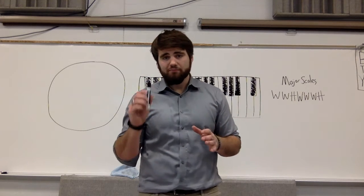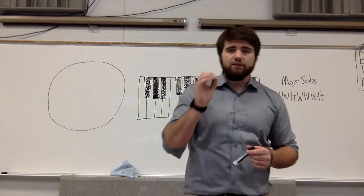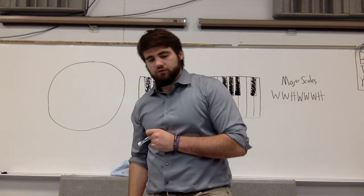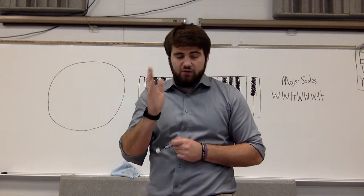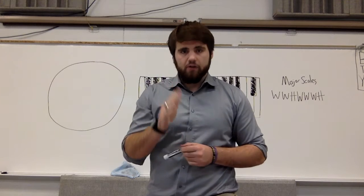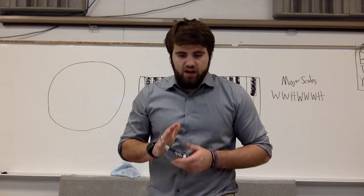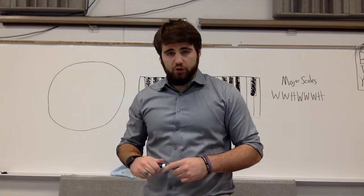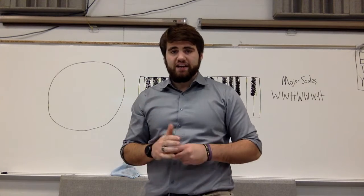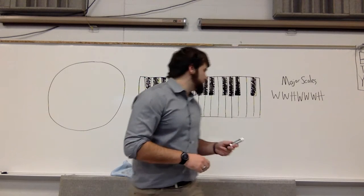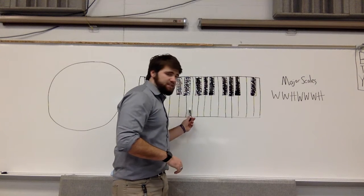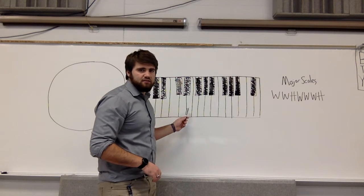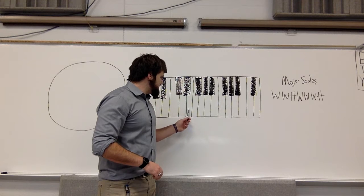Whole, whole, half, whole, whole, whole, half — that is the basis of forming major scales if all you are given is a root note, the first note of the scale. So for example, we're looking at the first thing on the front page. You have to draw dots on the following keyboards for each note on the major scale. The first note starts on an E. This is E — remember the groupings.